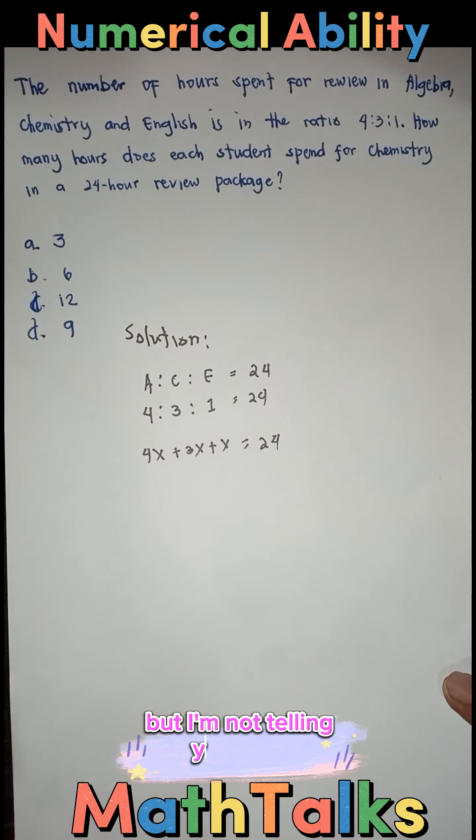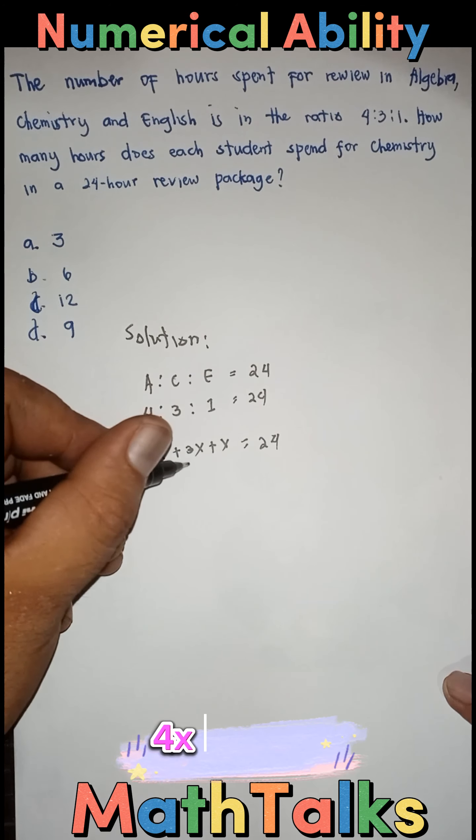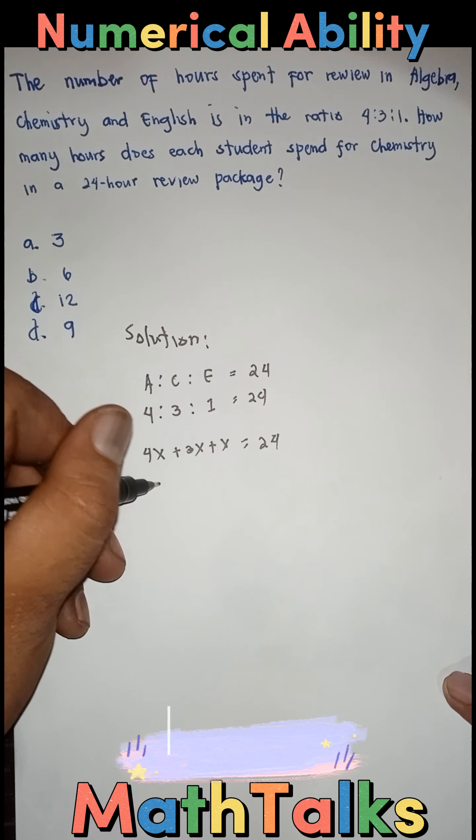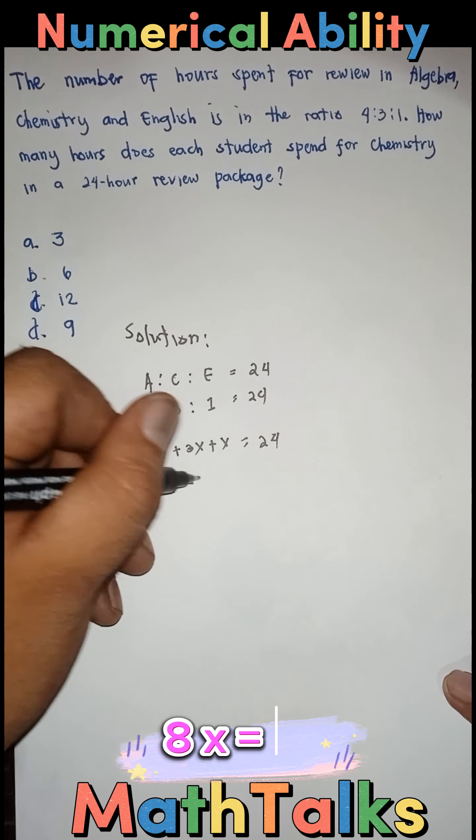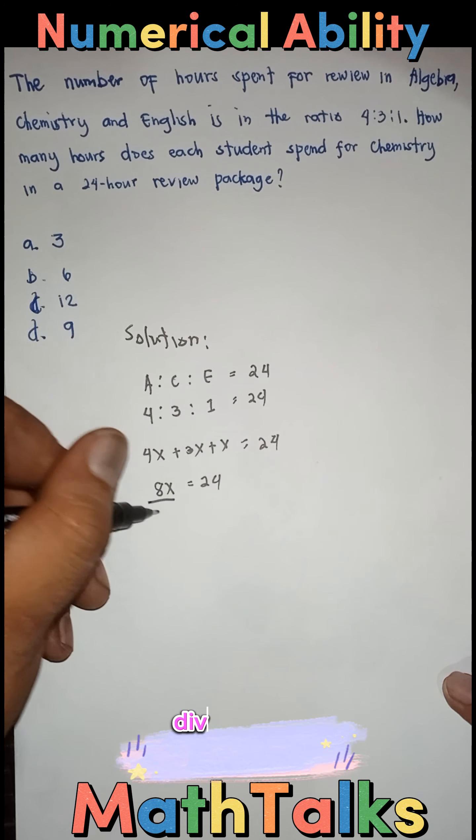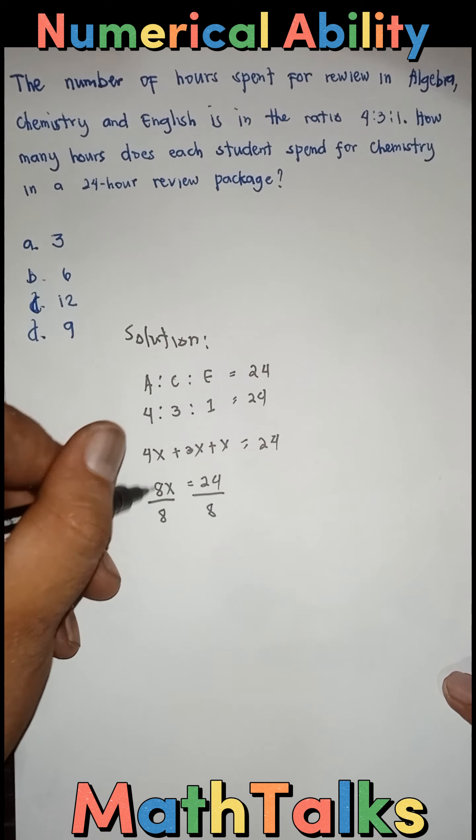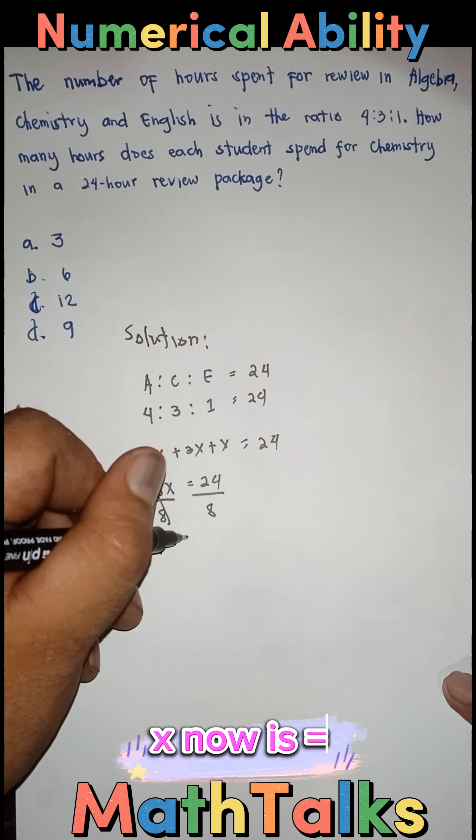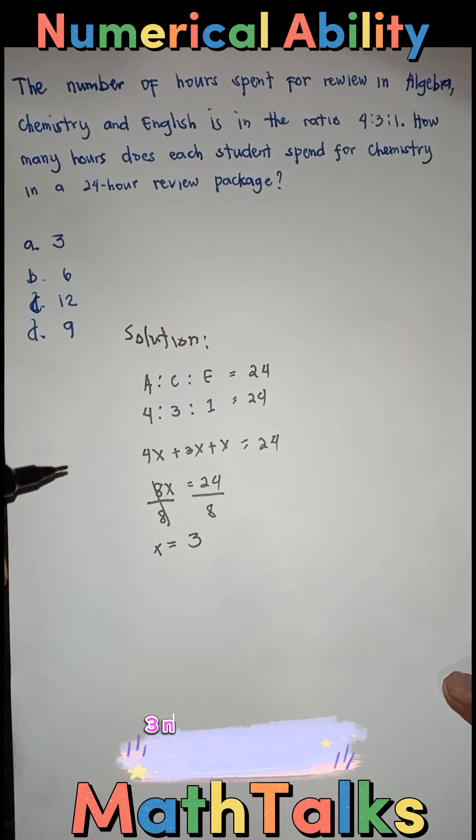Para makuha lang natin yung oras. So, 4X plus 3X plus X, that's 8X is equal to 24. Divide both sides by 8. X now is equal to 3.